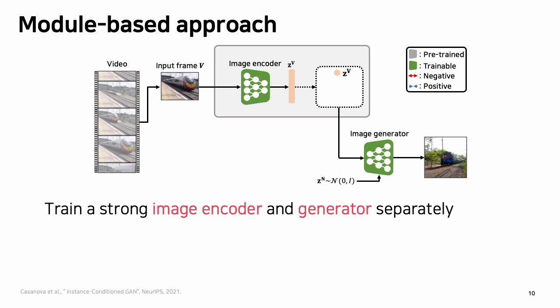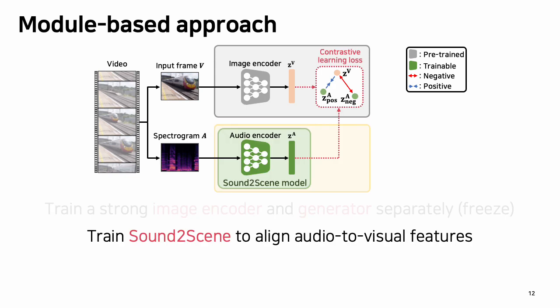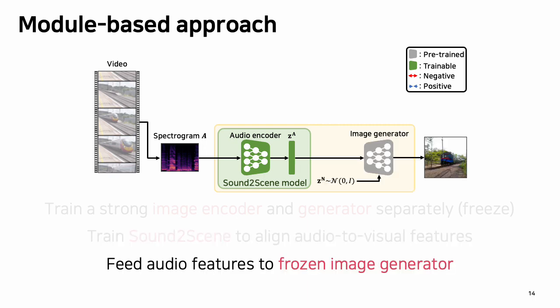First, we train a robust image encoder that can extract image features. Next, we train an image generator which can generate high-quality images with the image features from the image encoder. Once these two modules are trained, we freeze them both. Then we proceed to train the Sound-to-Scene model, learning to extract audio features aligned with anchored visual features using contrastive learning losses. In this way, we enrich the audio features with visual knowledge. After completing all training stages, we feed audio features into the frozen image generator to generate images.